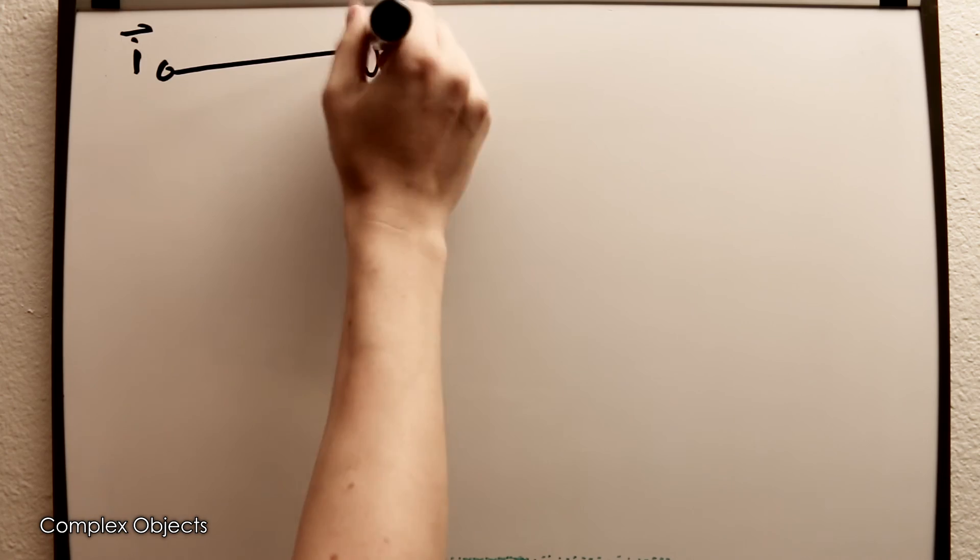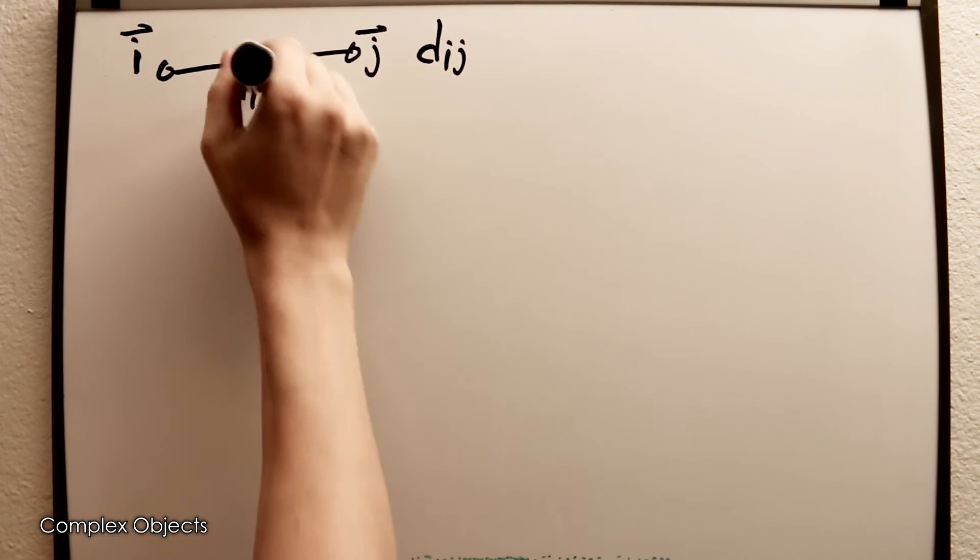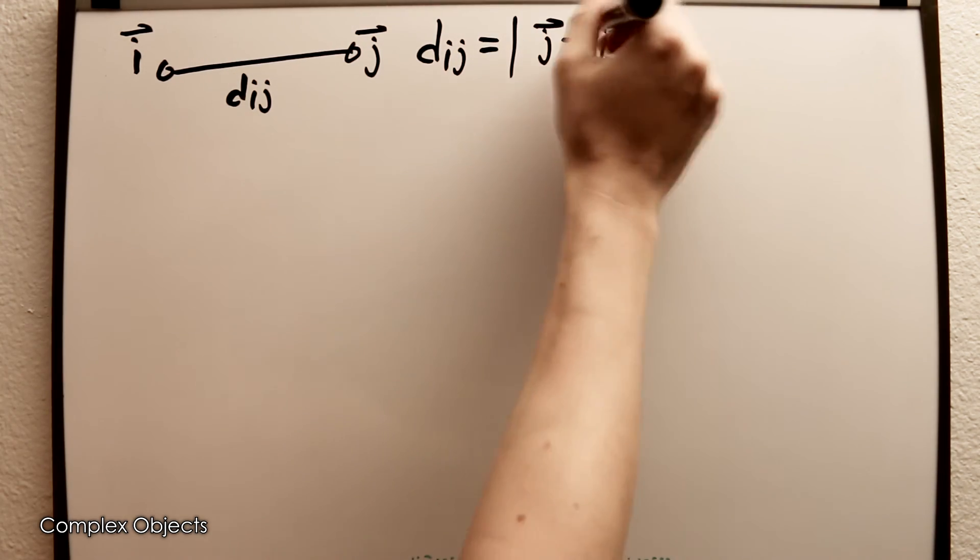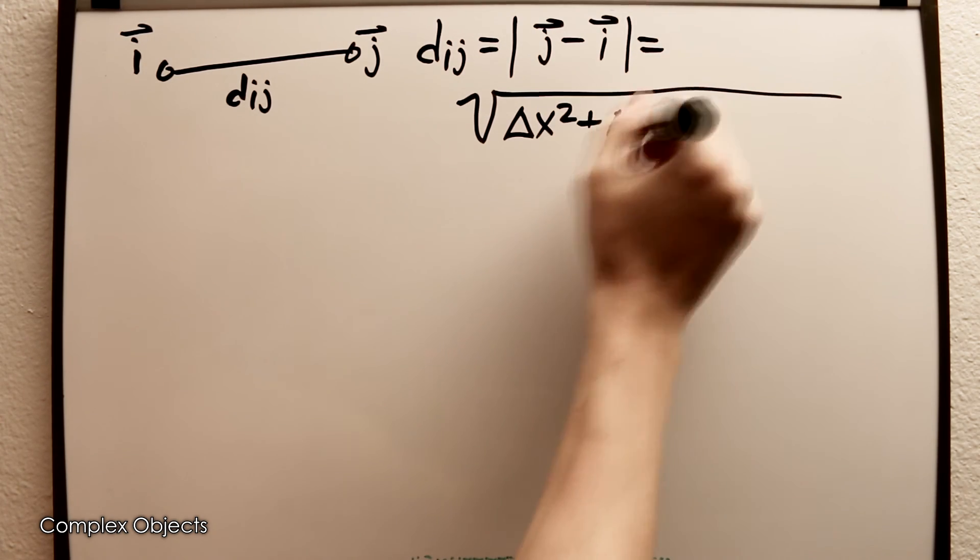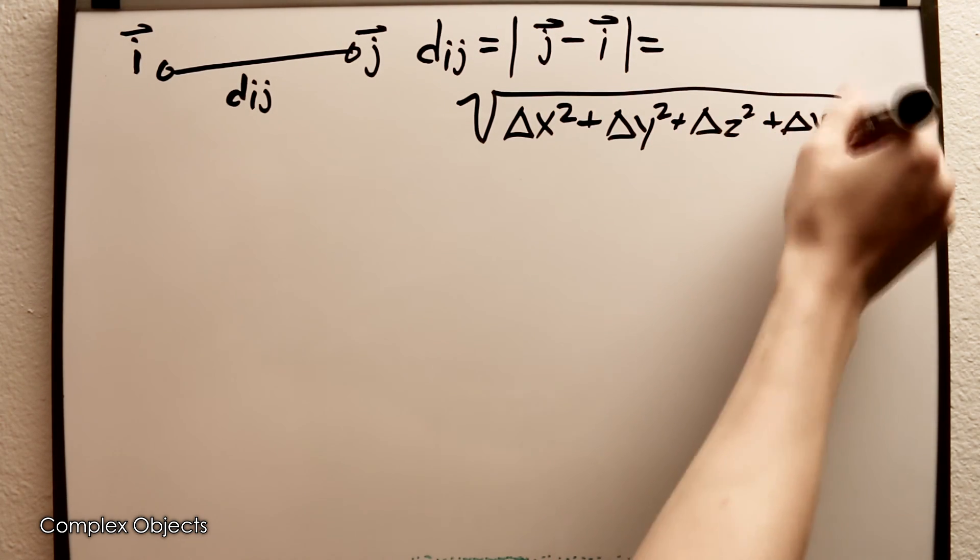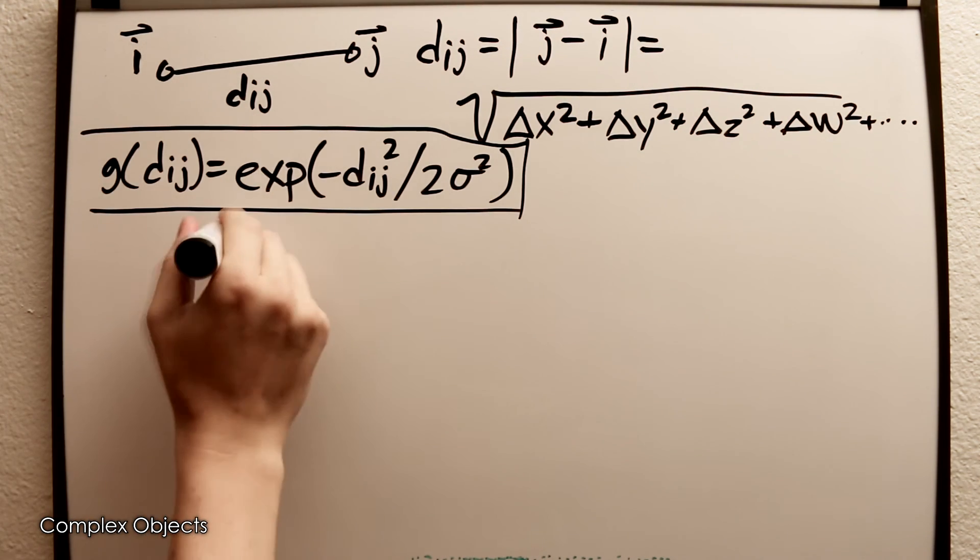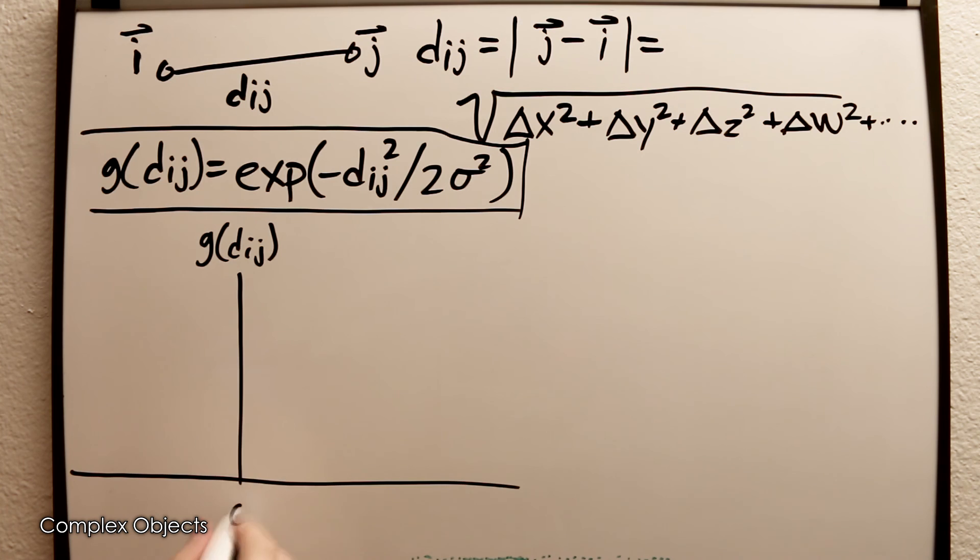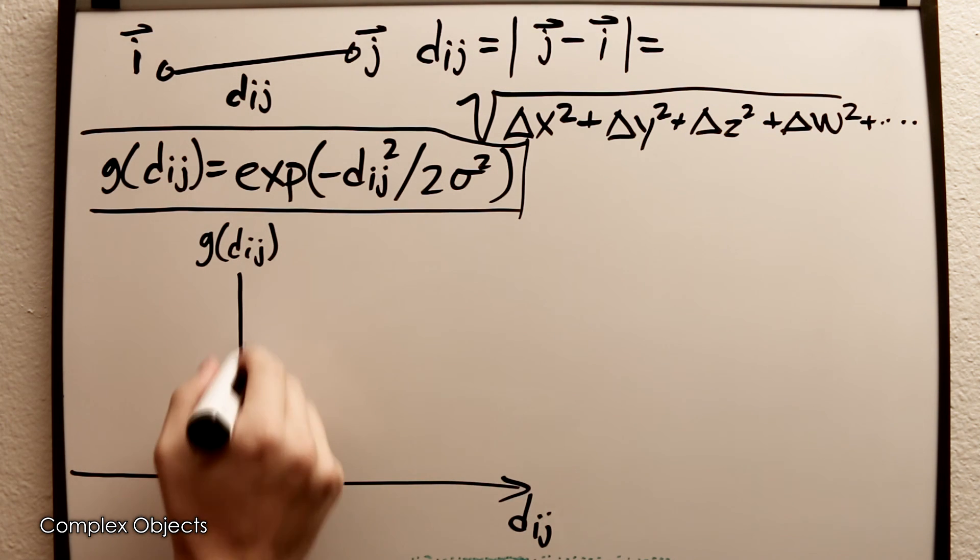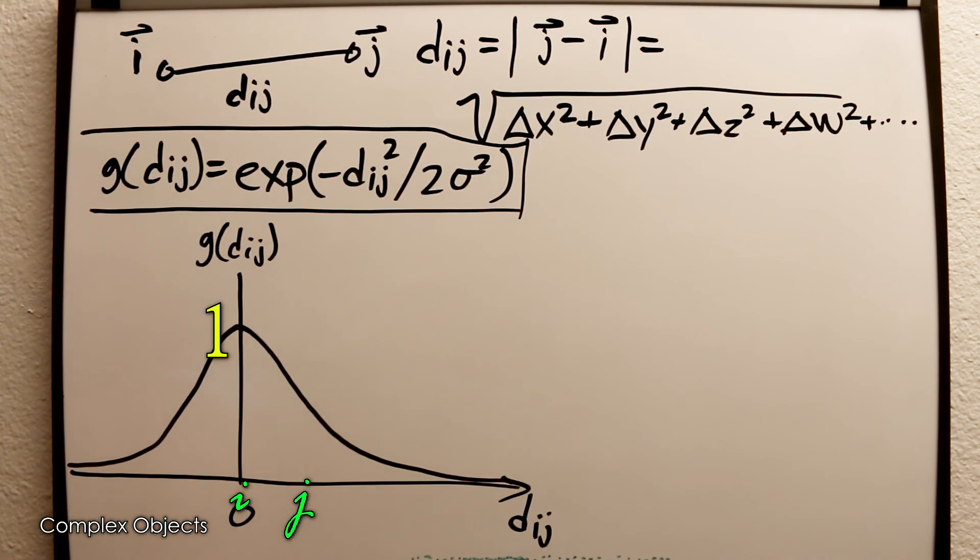So most methods will explicitly compute the similarity between two data points. If your data points are vectors, then the similarity is usually a function of the distance separating them. A typical function which is used is the gaussian kernel which has this expression. You can see for points that are very close to each other, have a low distance separating them, it gives a value which approaches one. And then as the distance gets larger, the value goes to zero. And if you look at this as the normal distribution, then the parameter sigma is the width of that distribution, and increasing sigma will linearly increase that width or the neighborhood size.